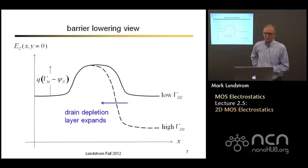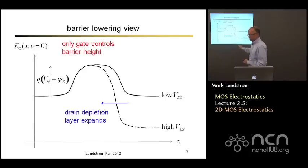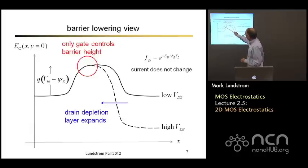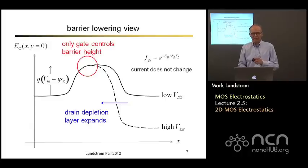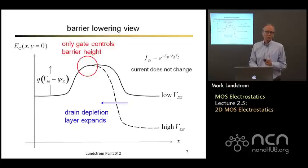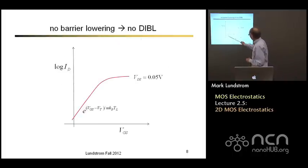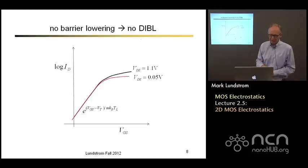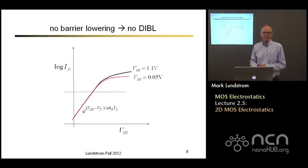Under conditions like that, only the gate controls the barrier height — the drain voltage doesn't have any effect. Since the current is exponentially related to the height of that barrier, if I think in terms of a thermionic emission model, the probability that an electron can hop over that barrier is e to the minus barrier height over kT. Since the barrier height is not changing with drain voltage, the current won't change with drain voltage and it will be saturated. What we would find under these conditions is that if we measured the IV characteristic under low drain voltage and under high drain voltage, there would be no translation along the horizontal axis — there is no drain induced barrier lowering.